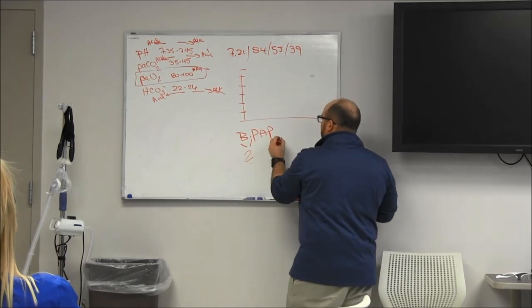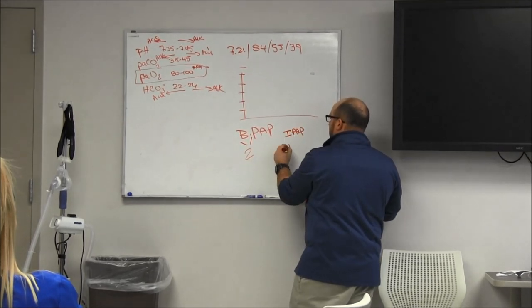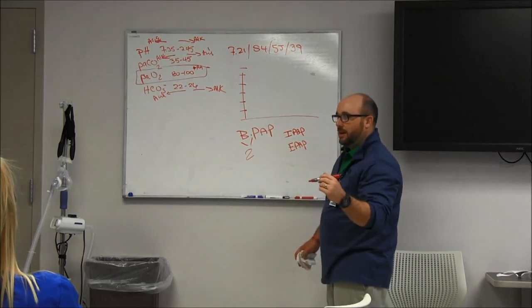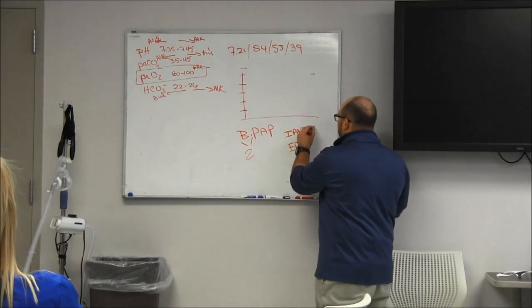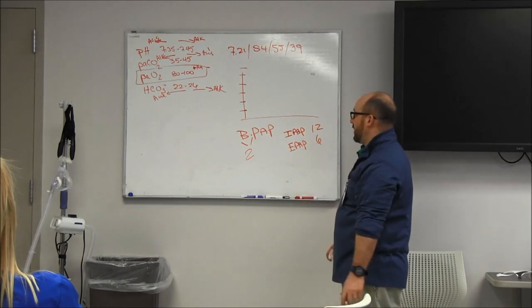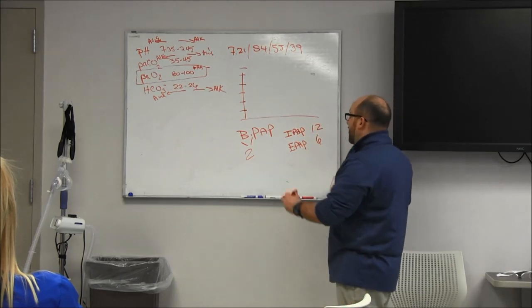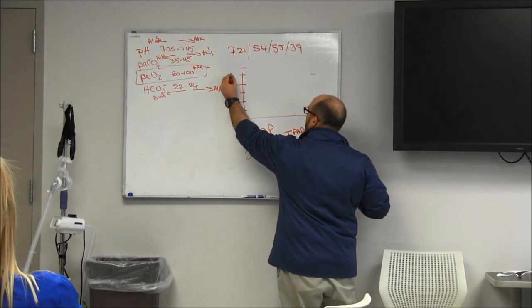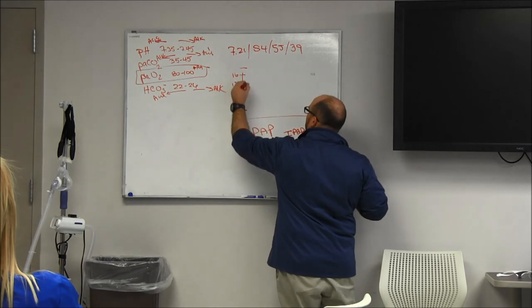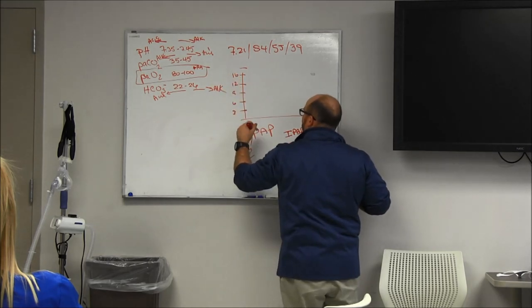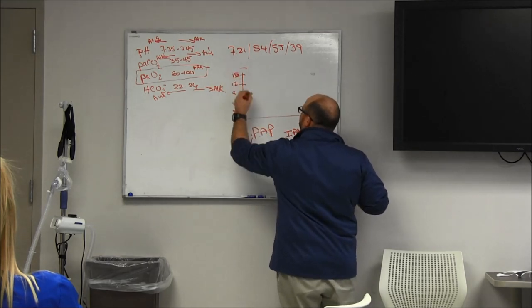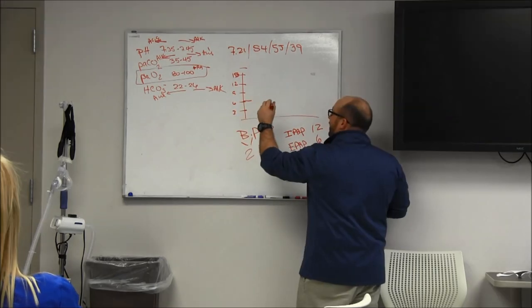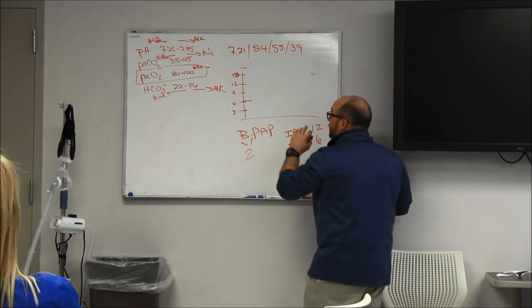The common BiPAP settings are going to be IPAP and EPAP. IPAP is inspiratory, EPAP is expiratory, 12 and 6. For some reason we always do 12 and 6 centimeters of water pressure, so it's going to look something like this.